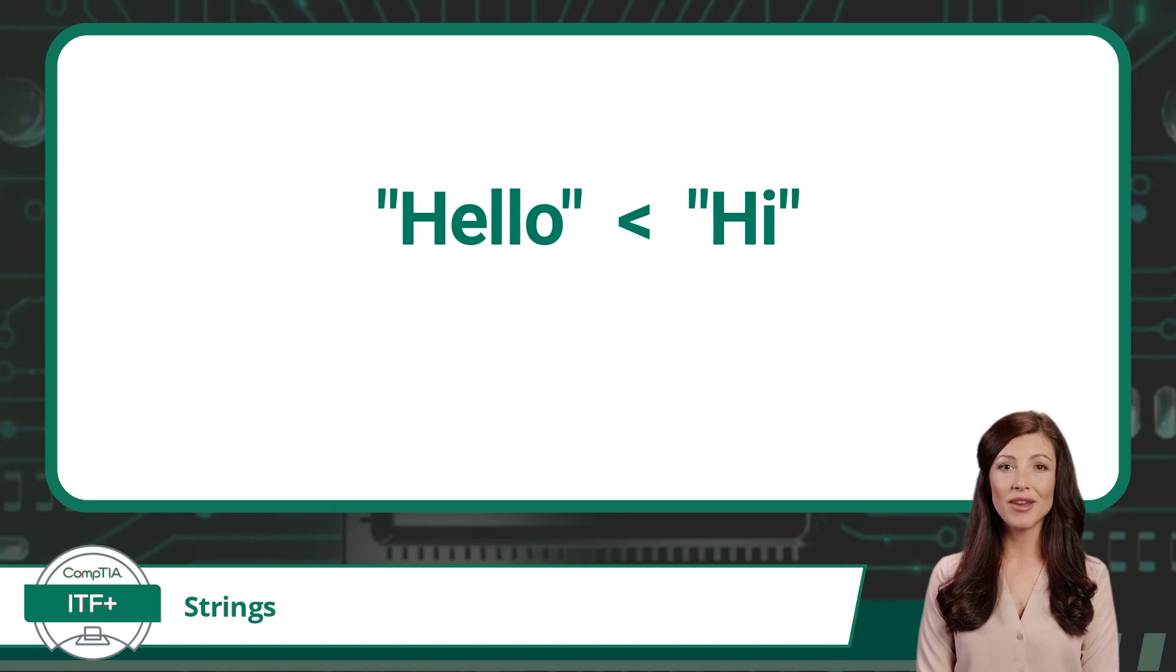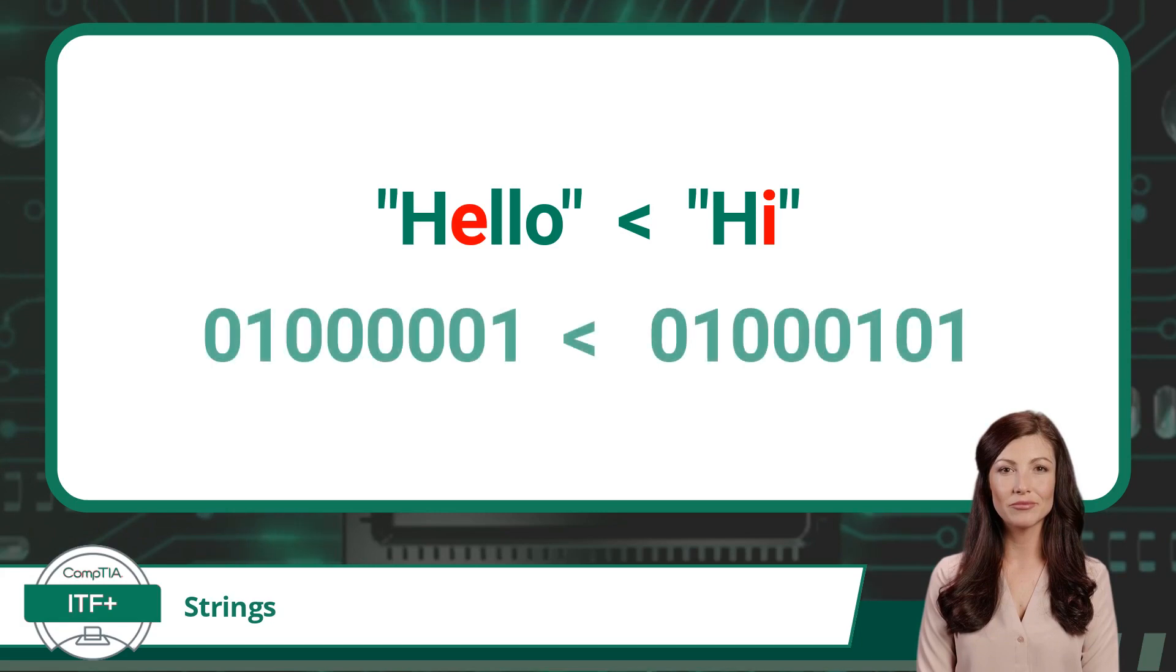Here we will compare the string hello and the string hi. We start at the beginning of the strings. Both have a capital H, so we move on to the next letter in each string. We see lowercase e and lowercase i are different, so we will compare their binary code point values. The binary value for e is less than binary value for i, so the string hello will be evaluated as less than the string hi. For this example, we used the ASCII encoding standard.